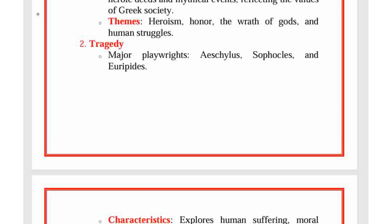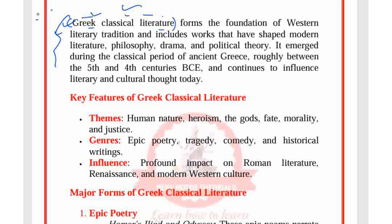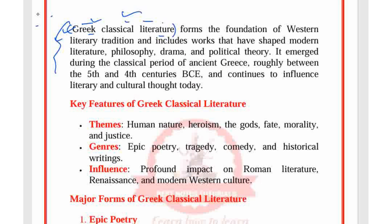Greek classical literature forms the foundation of Western literary tradition and includes works that have shaped modern literature, philosophy, drama, and political theory. It emerged during the classical period of ancient Greece, roughly between the 5th and 4th centuries BCE, and continues to influence literary and cultural sources today.